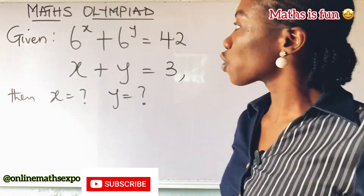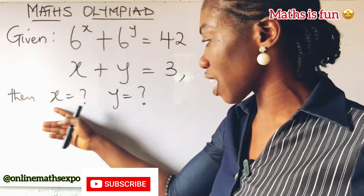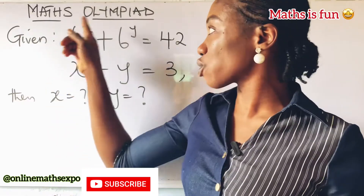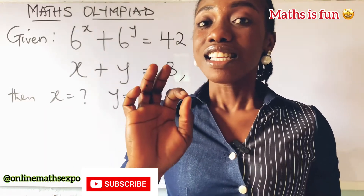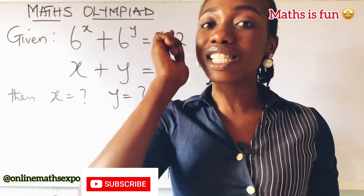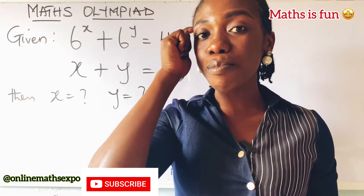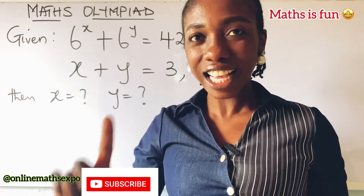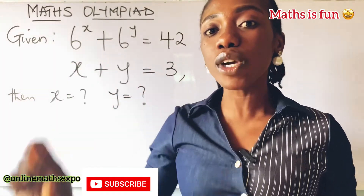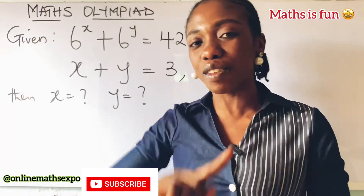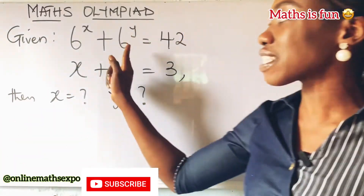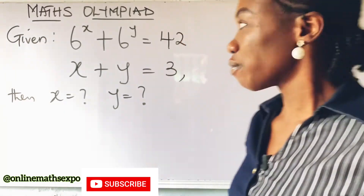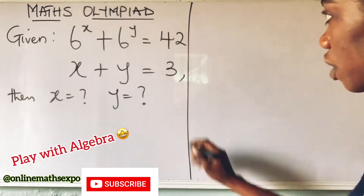So this is what we are asked to solve — to get the x and y values from a math olympiad problem. One thing about math olympiad is that it always wants you to think and find the best approach for any question. There is no single particular approach, but the question wants you to look out for the best one. Let's do it together.